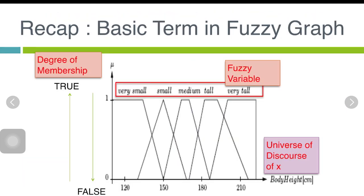Then, we need to recap on the basic terms of our fuzzy graph here. We have two axes, x-axis and y-axis.